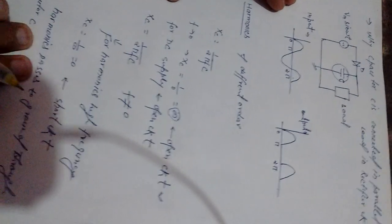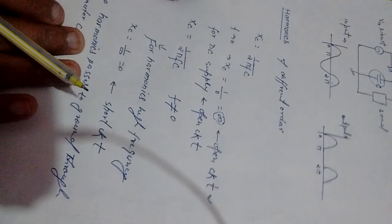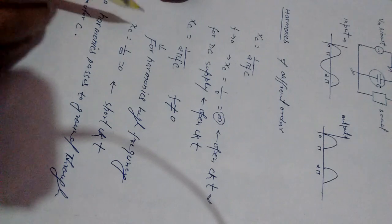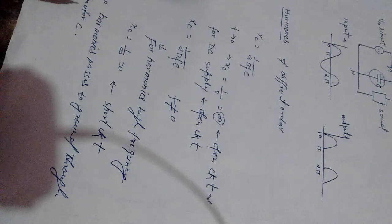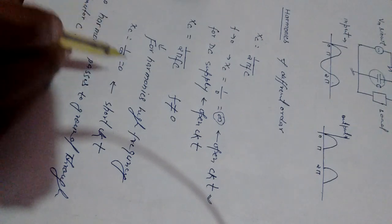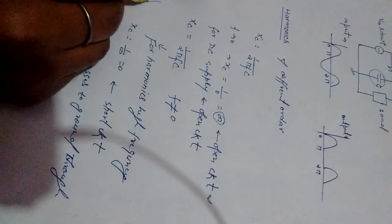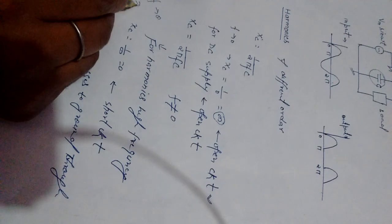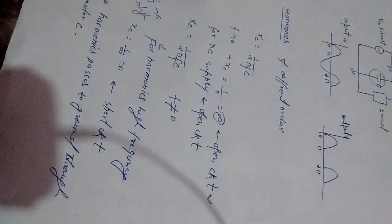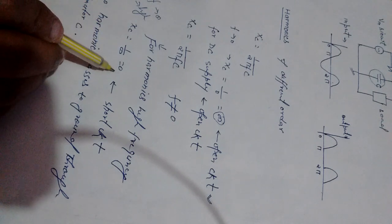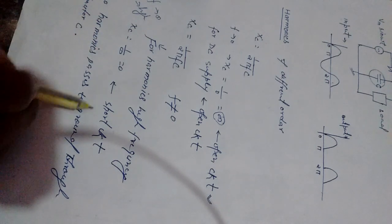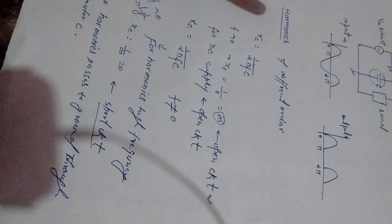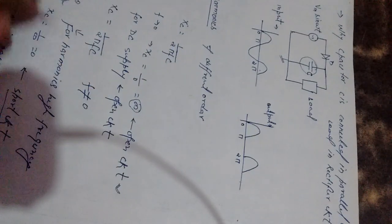But at high frequency, what happens? At high frequency, when f will be infinite or high, then Xc will be nearly zero or very less - it works as a short circuit. In that case, for high frequency, the capacitor works as a short circuit and all high frequency components can pass through to ground, and no component will go through to load.